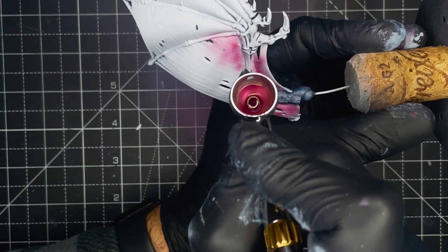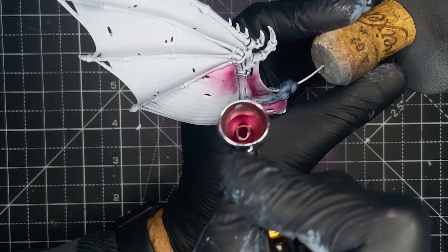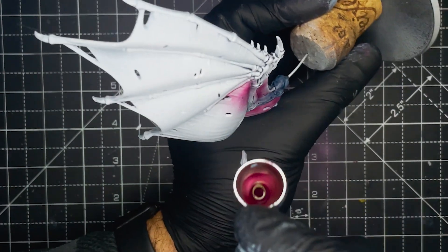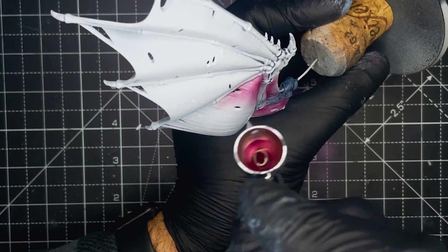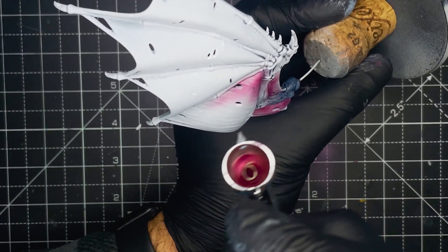Unfortunately there's not too much you can do about any overspray that goes onto any of the spines of the wings. So don't worry too much about that as we will be going in later on and touching them up.